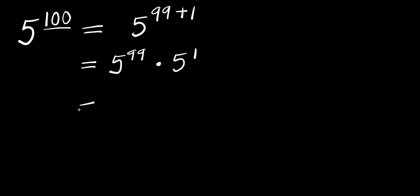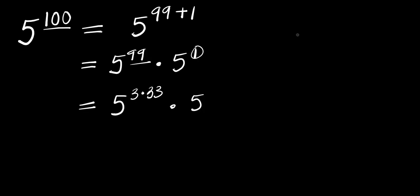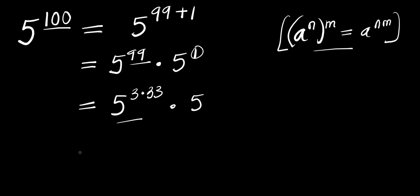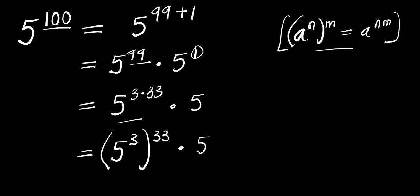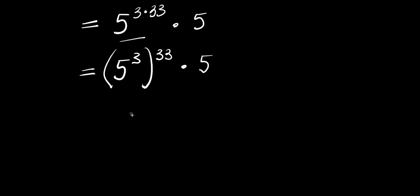Now from here, 5 to the power of 99 can be written as 5 to the power of 3 times 33. We apply the identity: a^n raised to the power of m equals a^(n×m). So we get 5^3 to the power of 33. Now 5 to the power of 3 is 5 times 5 times 5, which equals 125. So this becomes 125 to the power of 33.